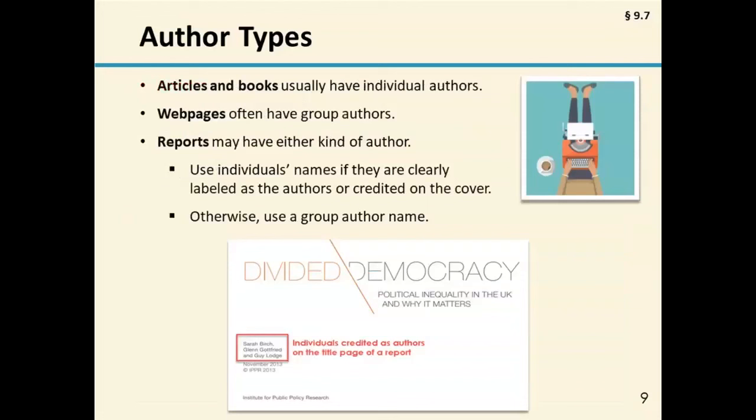One more quick thing about author types — they can be individuals or groups. For journal articles and books, authors are usually individuals, but sometimes it's a task force or group author. For a web page, it's the reverse; they're often group authors, though sometimes individual authors appear, so you have to look at what you've actually got. We always say, cite what you see. For reports, look for whether there are individual people credited on the cover page, sometimes the second or last page. If they're clearly credited as authors, use those individual names; otherwise, it's the group agency.